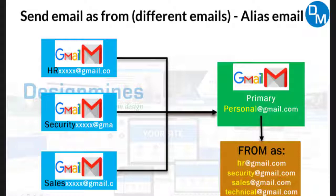In this one primary email account, after you log in, you can see all emails that reached HR, security, and sales. But what if you want to reply to the respective email category? For example, if you have to reply to HR emails, or to security, or to the sales team, you cannot use your personal email as the 'from' address. So Gmail provides a feature to set up a different 'from' email address.